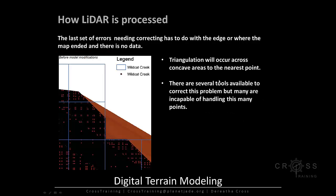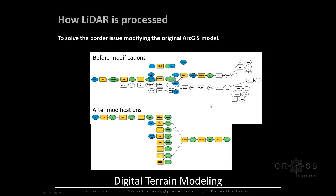The last set of errors involves the edge where the map ends and there is no data. ArcGIS doesn't know the map has ended, so triangulation will occur across concave areas to the nearest point, creating errors. There are several tools available to correct this problem, but many are incapable of handling this many points. The solution involves manipulating the standard terrain processing model — adding a column of tools to create a boundary and use that boundary to process the points and create clean edges.